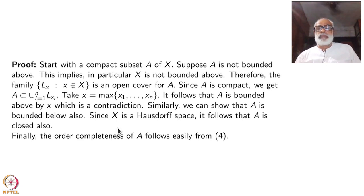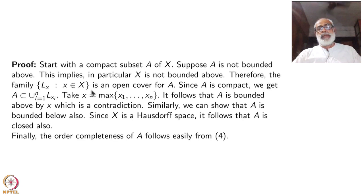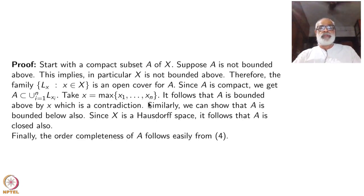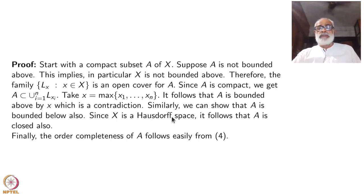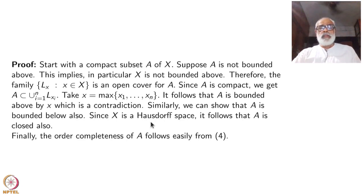Let us go through it carefully. Start with the compact set A. Suppose A is not bounded above. The family {Lx : x ∈ X} becomes an open cover for X, hence covers A. Since A is compact, we get a finite subcover: A ⊂ Lx₁ ∪ ... ∪ Lxₙ. Take x to be the maximum of x₁,...,xₙ — possible in a totally ordered set. It follows that A is bounded by x, giving a contradiction. Similarly A is bounded below using right rays Rx.